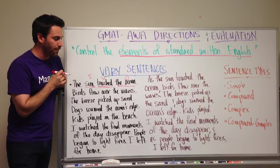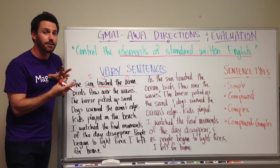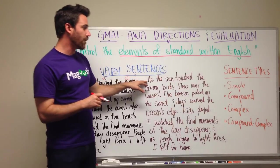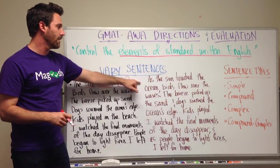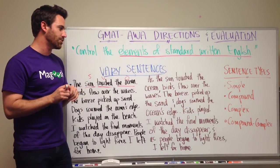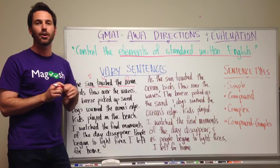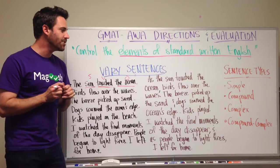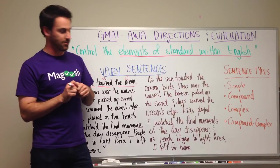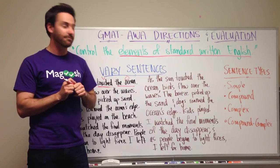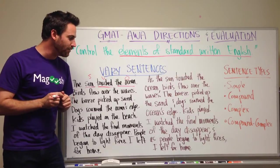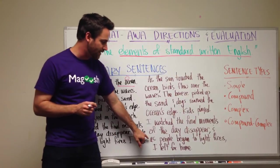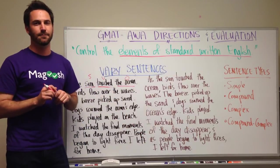So, let's look at this other passage and see how it sounds differently based on having a variety of sentences. Here we're going to start with a complex sentence: 'As the sun touched the ocean, birds flew over the waves. The breeze picked up the sand, and dogs roamed the ocean's edge. Kids played. I watched the final moments of the day disappear, and as people began to light fires, I left for home.'